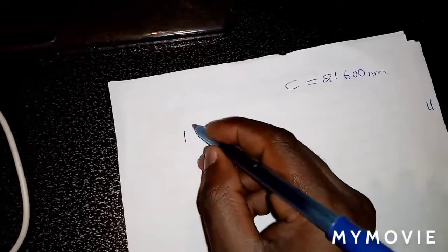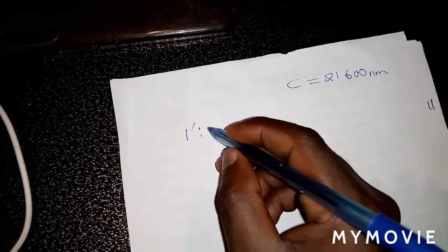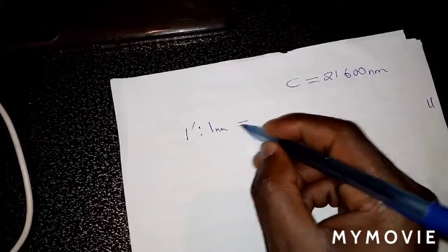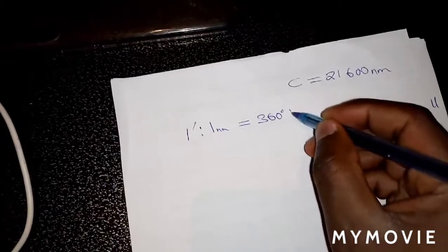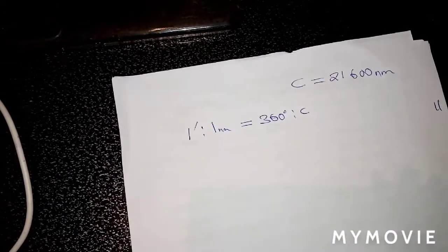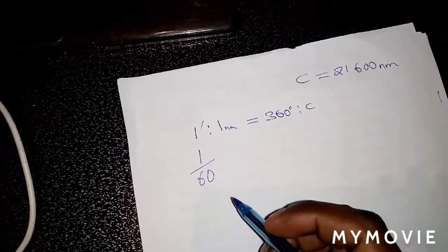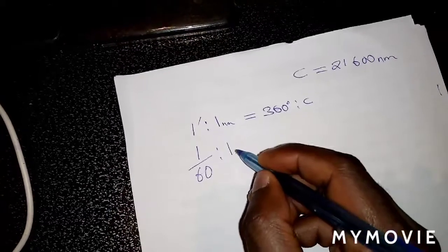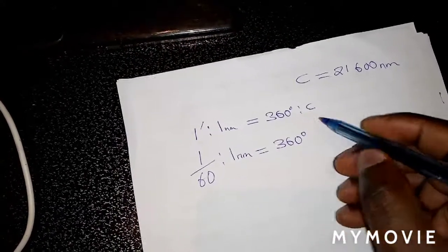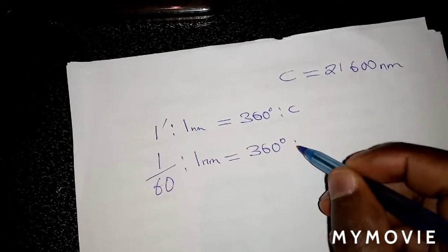In my class I explained this with a very simple concept. So what we can do is we want to show that circumference is equal to 21,600 nautical miles. We know that one minute is in the ratio of one nautical mile, and 360 degrees is in the ratio of the circumference. We also know that one minute is out of 60 minutes which makes an hour, to the ratio of one nautical mile, is equal to 360 degrees to the ratio of circumference.